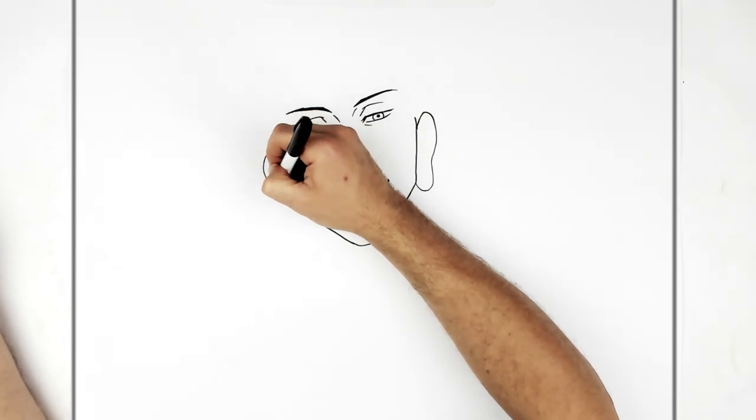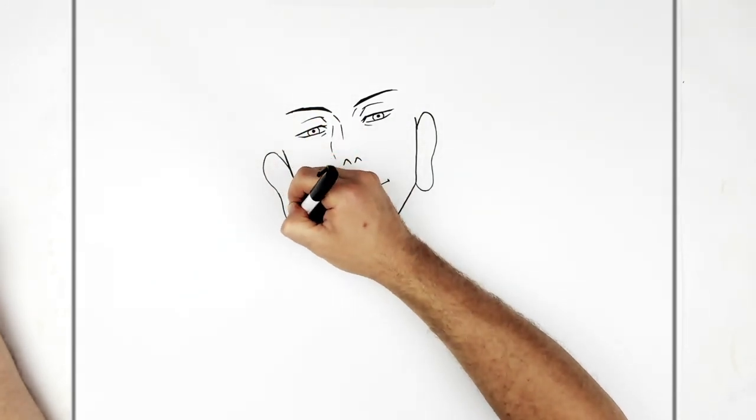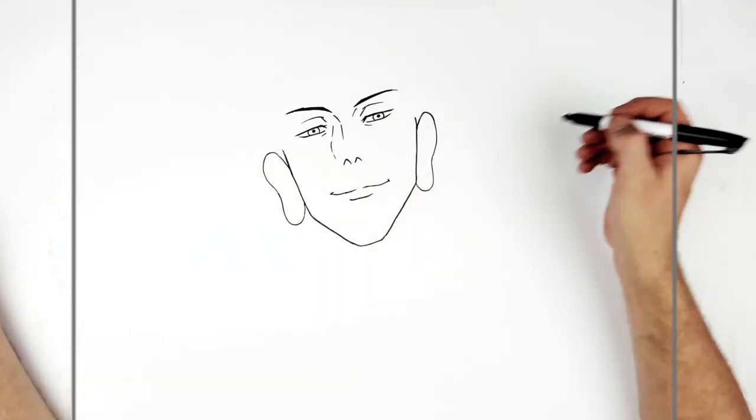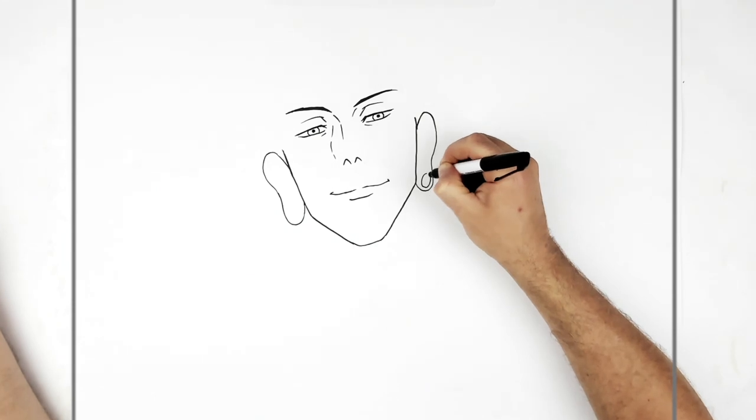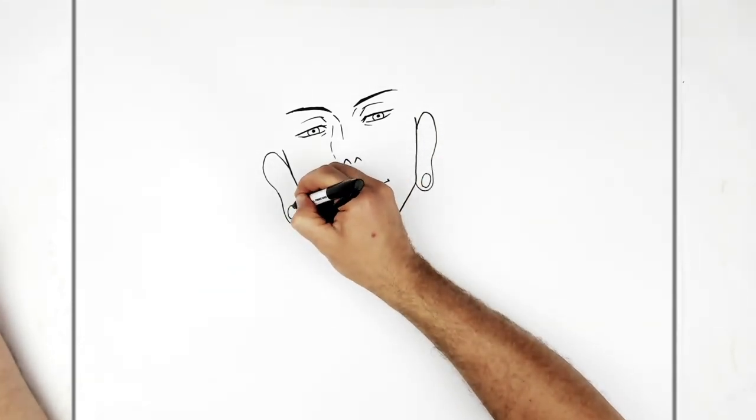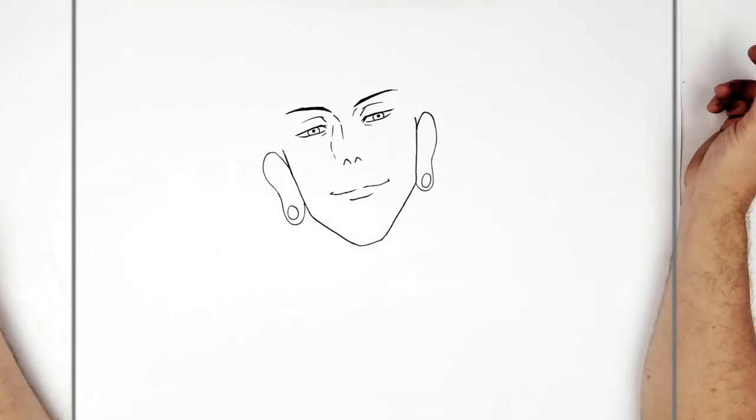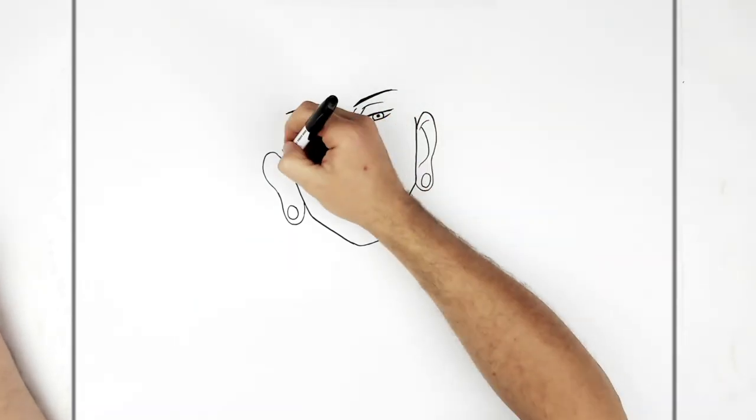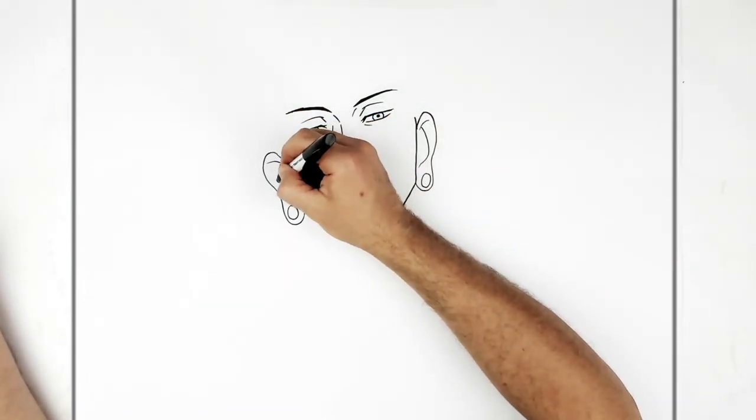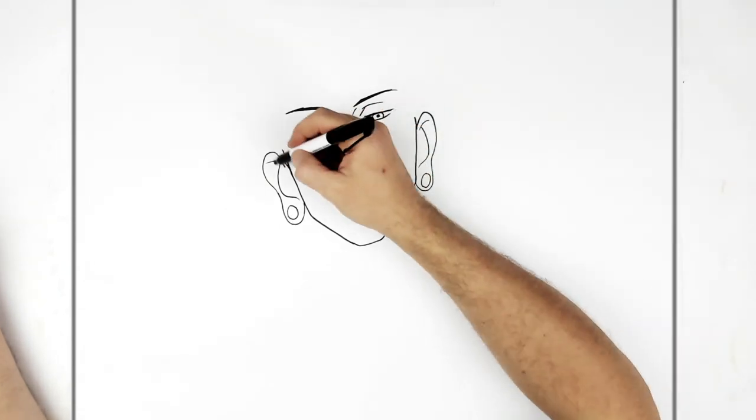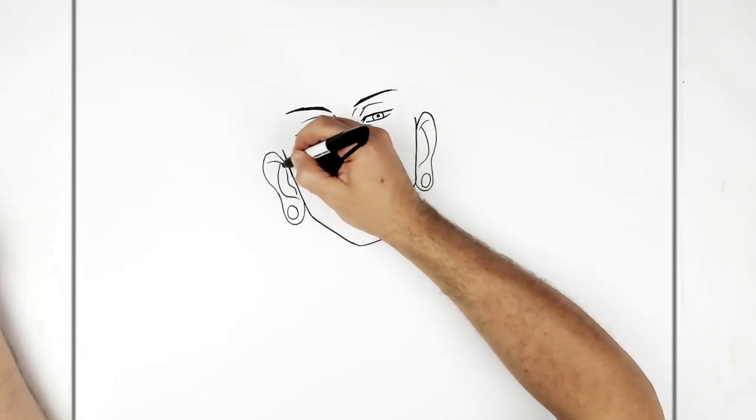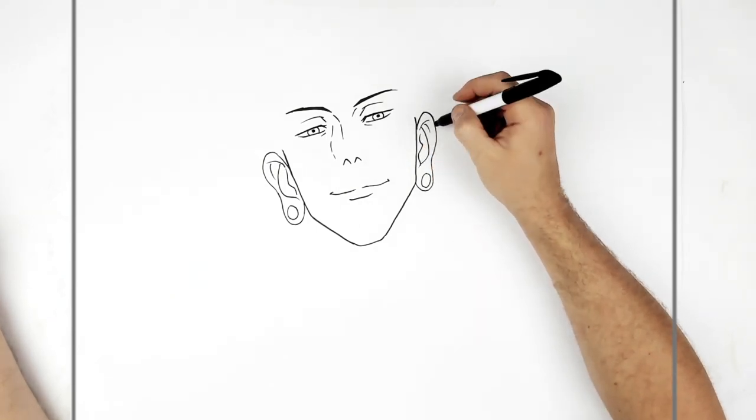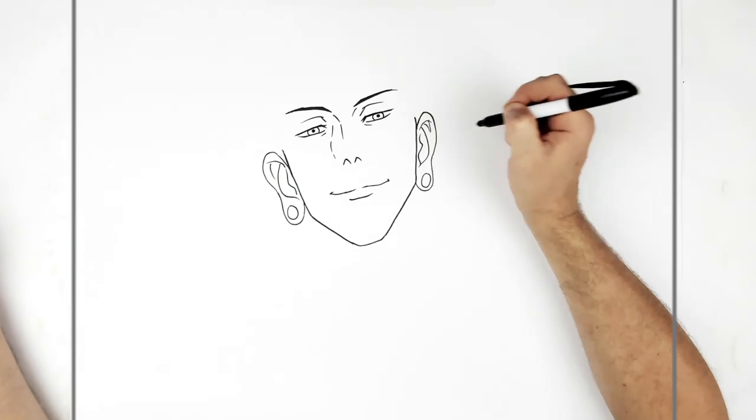And he's got these big earlobes. And so he's got like, I don't know if you've ever seen those statues of the Buddha, but it's like these big ears. And then ear lines inside, so just like a letter J sort of thing is a good way to get started. And then if you want, more lines inside there, like so.